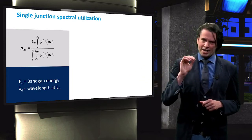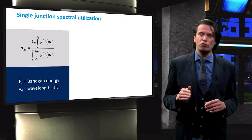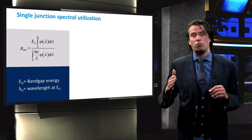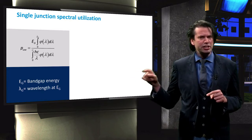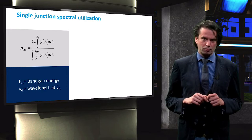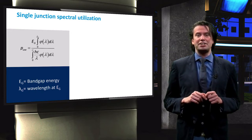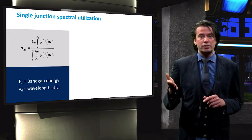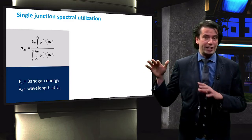Lambda_g denotes the photon wavelength that corresponds to the band gap energy of the absorber material of the solar cell. By integrating the spectral photon flux over all absorbed wavelengths and multiplying it by the band gap energy, we find the amount of usable energy. The fraction of usable energy is then determined by dividing with the total amount of incident energy.